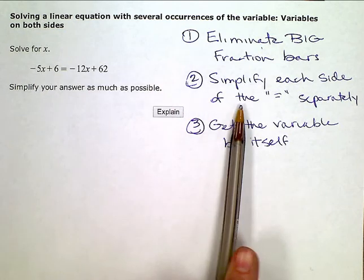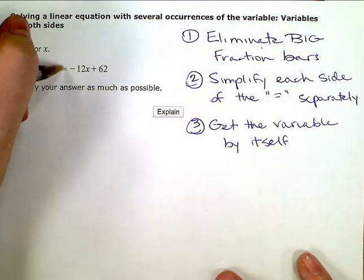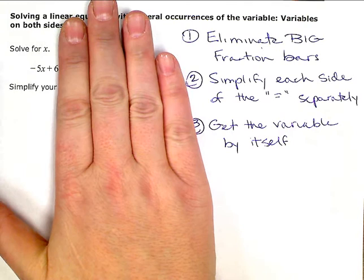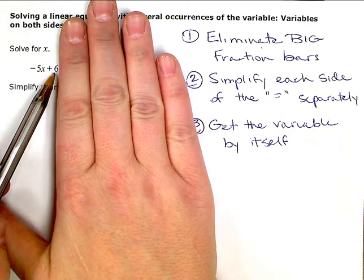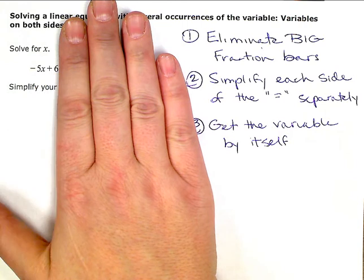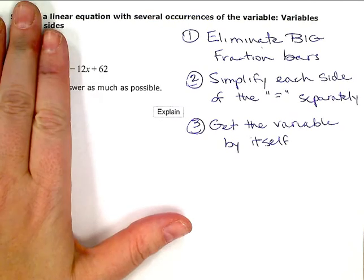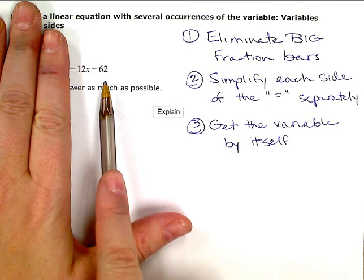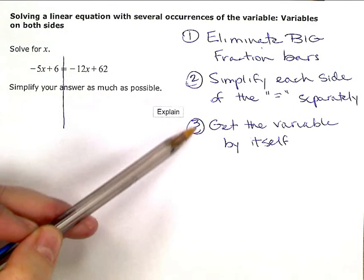Simplify each side of the equals separately. So if this is my equals dividing my right side from my left side, if I look at just the left side individually, I have a variable term and a constant term. They're not like terms, so I can't combine them or simplify them. Similar situation on the right. I have one x term or variable term, one constant term without a variable. They're not like terms, so I can't combine them or simplify them. So I just move on through phase two and start with phase three here.